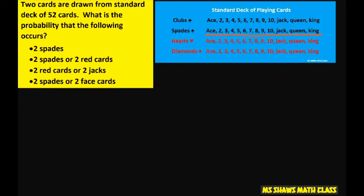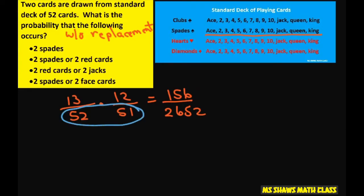So spades, there's a total of 13 spades. Remember, it's always without replacement if it doesn't say so. So there's 13 out of 52 for the first one. You don't replace, and now you have 12 out of 51, and that's going to give you 156 divided by 2652. It's always good to know this number because we're going to be using this number a lot, and that reduces to 1 over 17.